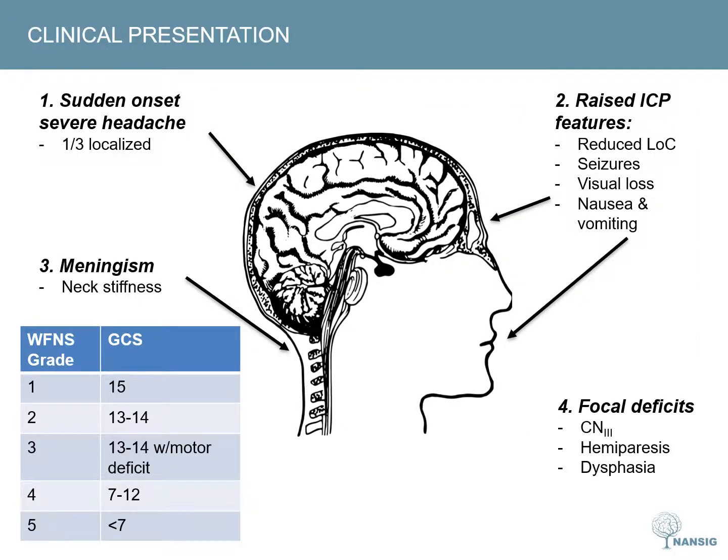The typical presentation of subarachnoid haemorrhage is that of a thunderclap headache, reaching its maximum intensity within seconds. Patients often feel that they are about to die. Other clinical features of raised intracranial pressure can be present and are often dependent on the volume of intracranial haemorrhage. Meningism is often a subjective finding.